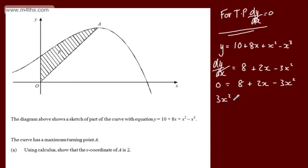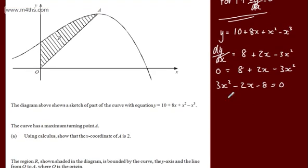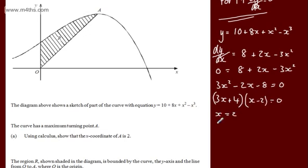Rearranging: 3x squared minus 2x minus 8 equals 0, which factors to give (3x plus 4)(x minus 2) equals 0. So x equals 2 or x equals minus 4 thirds. The second solution corresponds to a minimum point visible on the graph, and x equals 2 gives us point A, as required.